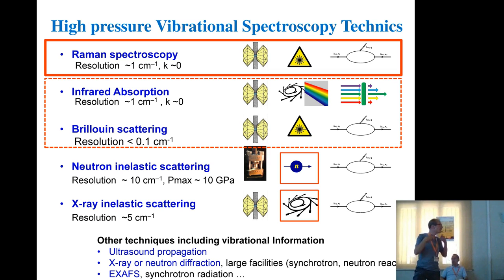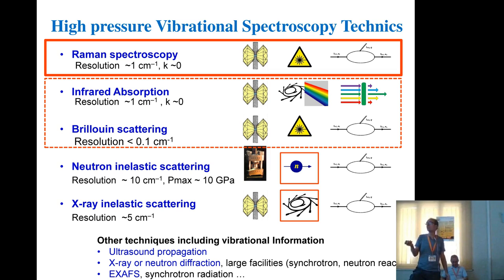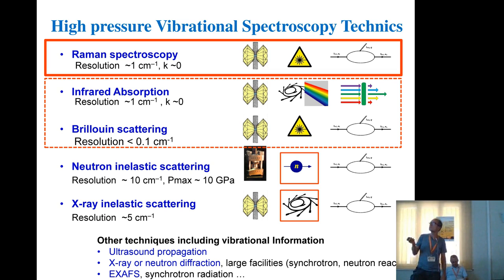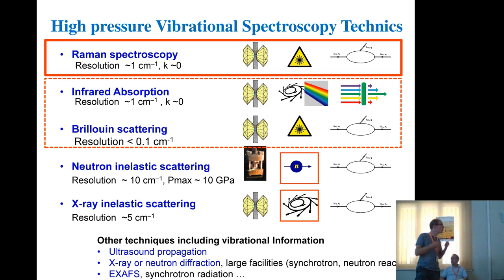For neutron inelastic scattering, the scattering cross-section is very small, so you need to reduce resolution to get more intense signal. Typically you work in a range of some inverse centimeters. For infrared or Raman spectroscopy, k is approximately zero because we are dealing with light and the momentum of light is very low — momentum must be conserved, so we cannot create phonons with high momentum.